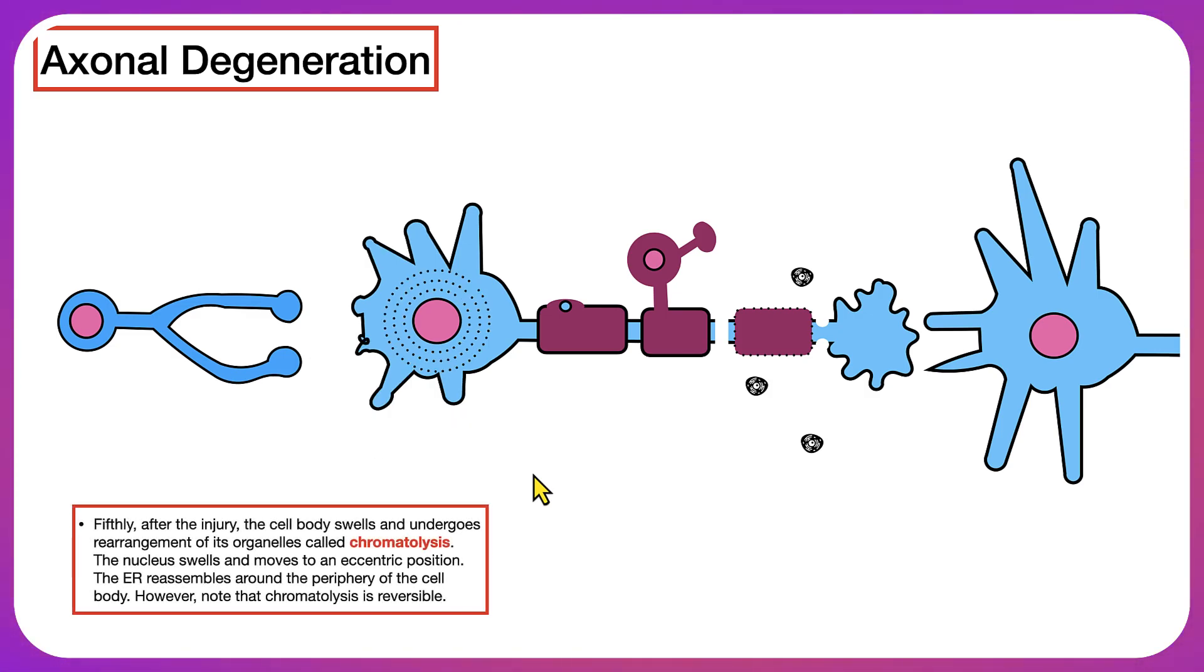The next step is going to be chromatolysis. Chromatolysis is basically a process in which the cell body swells and undergoes the rearrangement of its organelles. During this process of chromatolysis, the nucleus will swell and move to an eccentric position. The cell body is going to swell and the ER is going to reassemble around the periphery of the cell body.